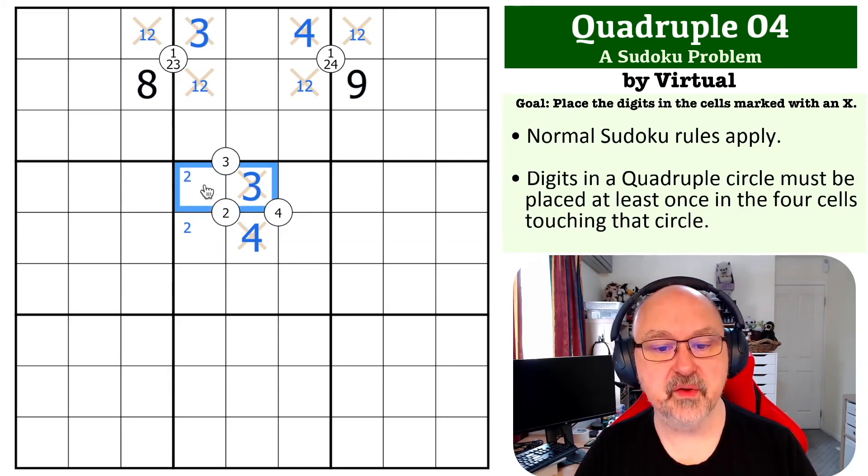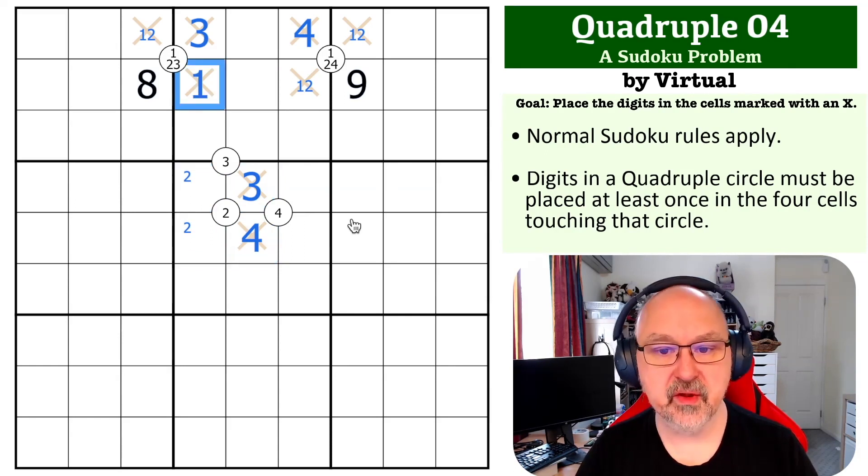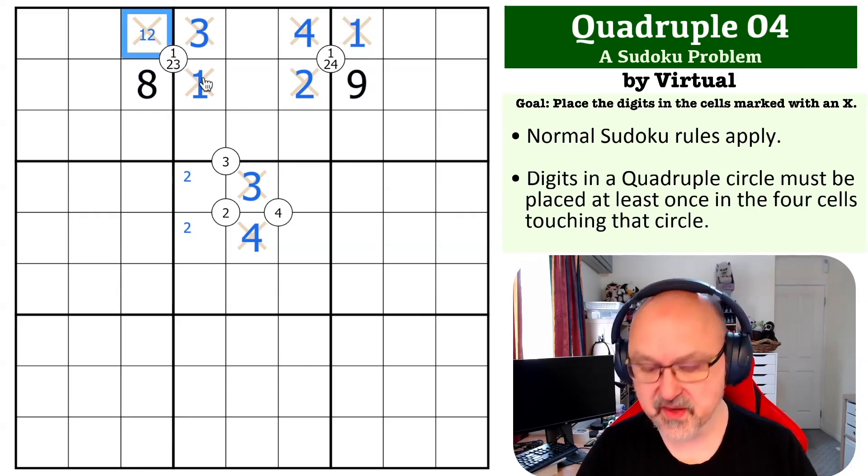Now we need to put a two into one of these two, and a two having to go in here to fulfill this quad means that can't be a two. This becomes the one, this becomes the two.